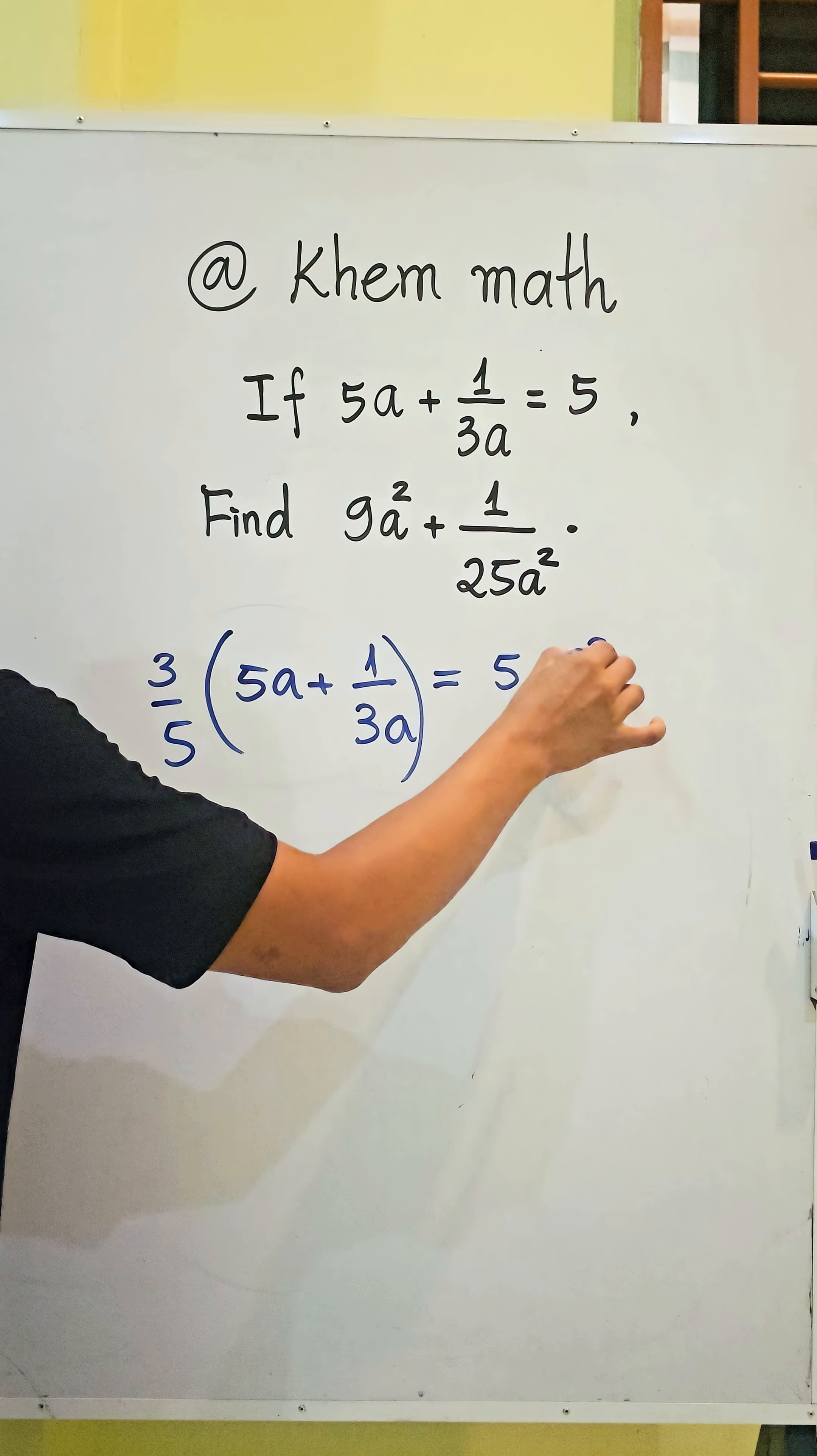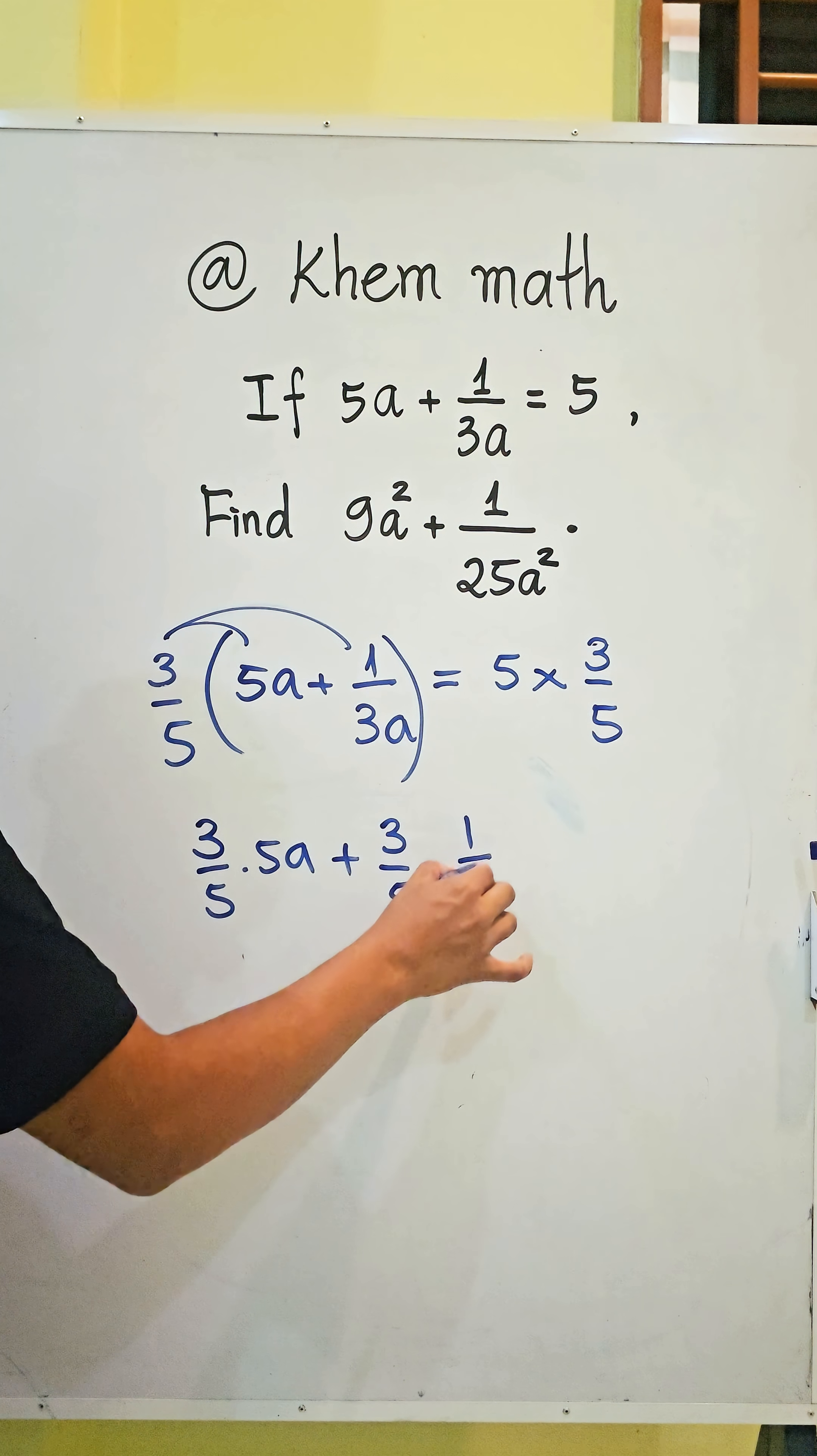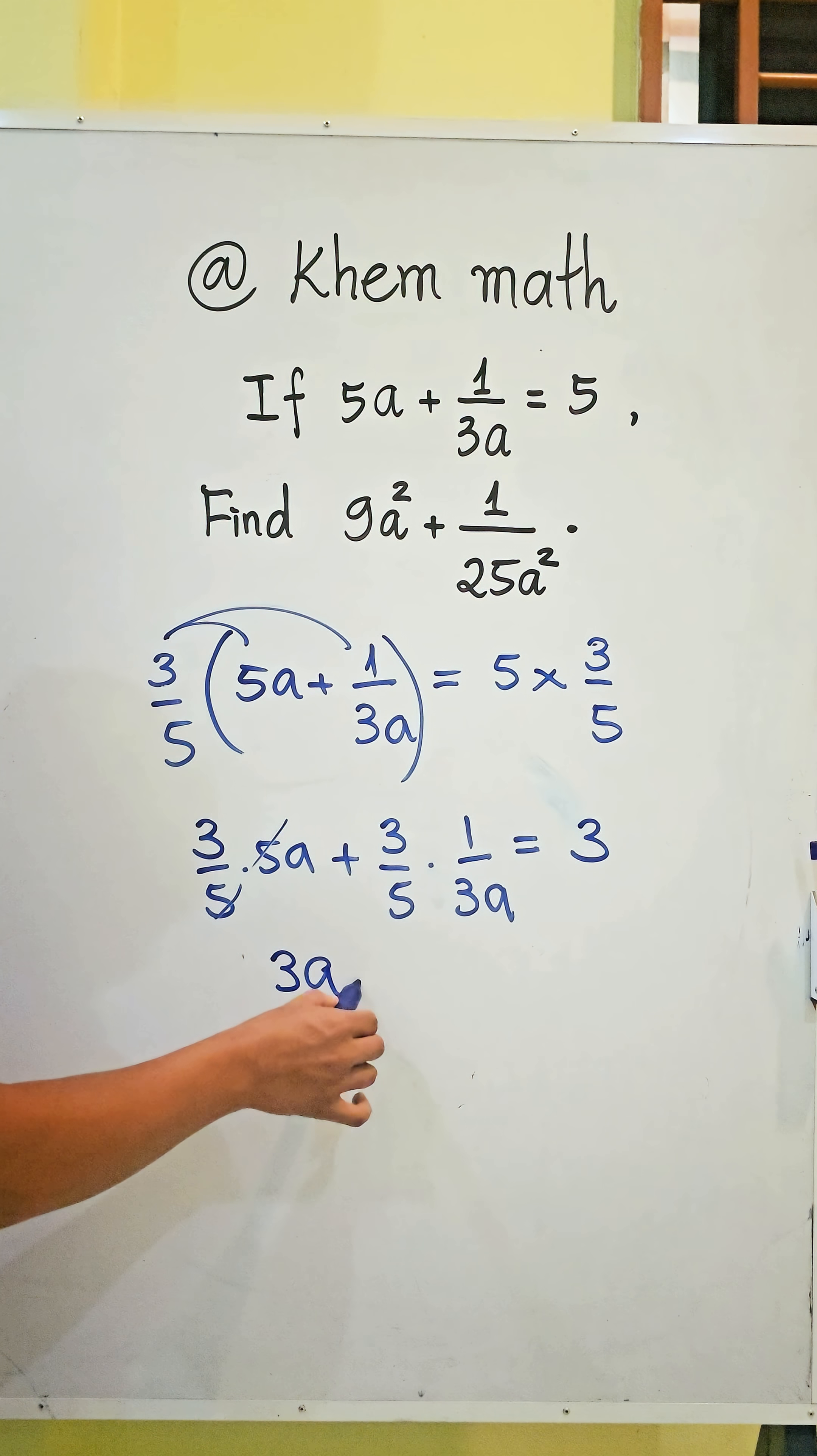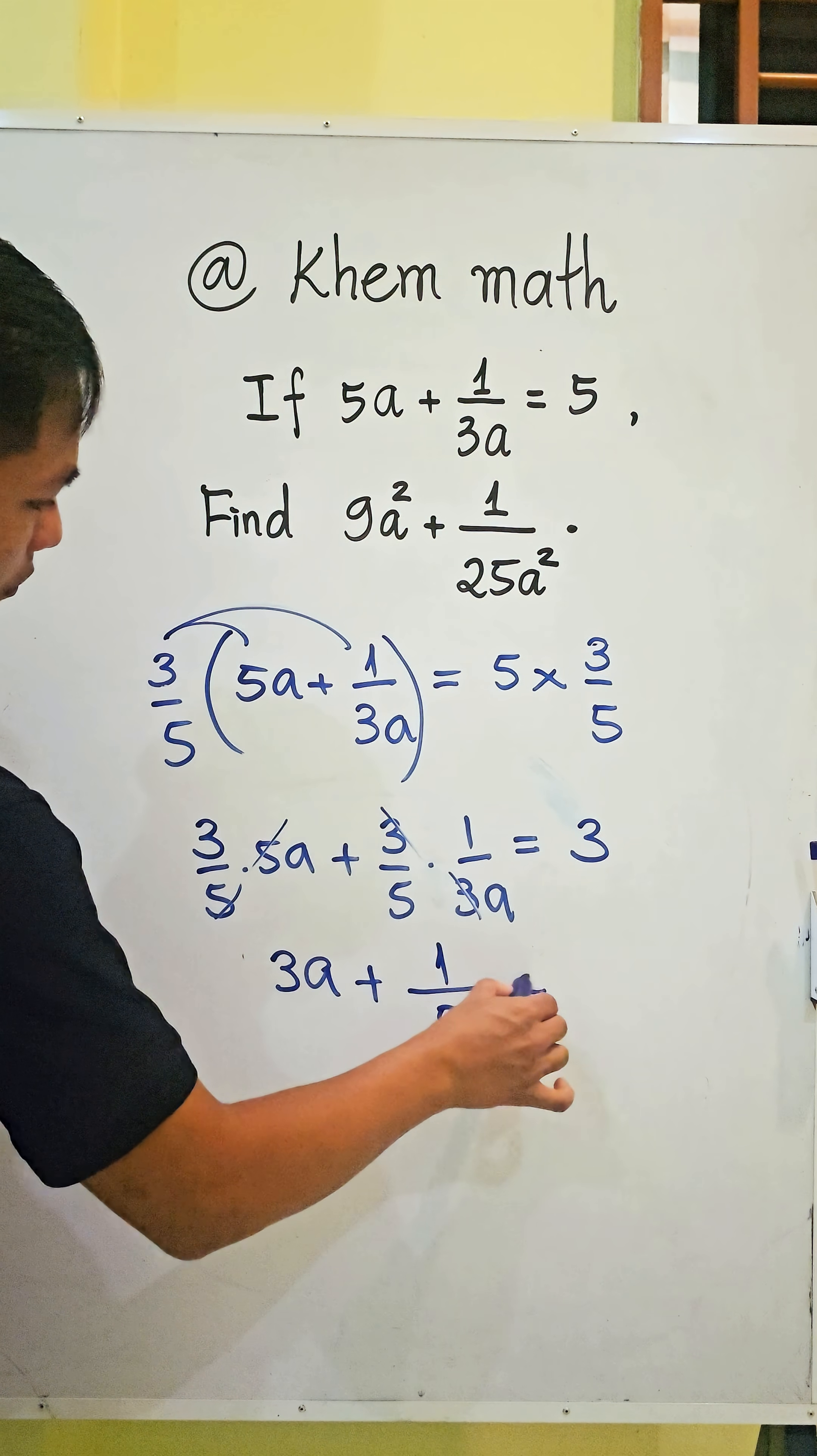So here also multiply with 3 divided by 5 and we expand. Here we get 3 divided by 5 times 5a plus 3 divided by 5 times 1 divided by 3a. And here we simplify to get 3a plus 1 divided by 5a equals 3.